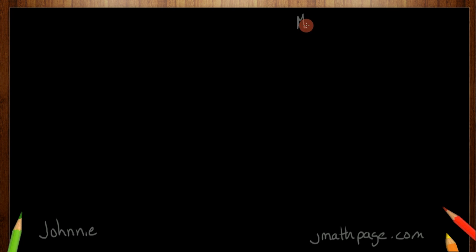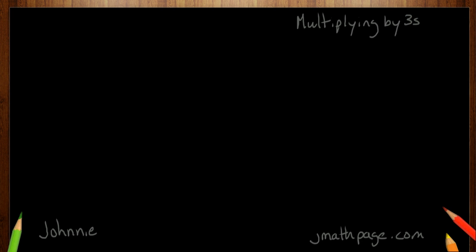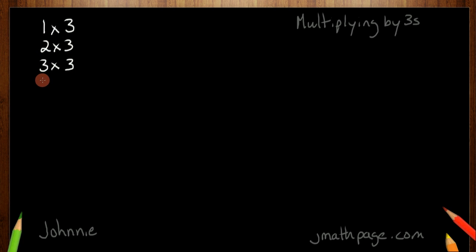Today we're looking at multiplying by threes. You may have seen this in your class or at home when you're thinking about multiplication — you may have seen a list like this. One times three, two times three, three times three. This is a good list. It's the times table.